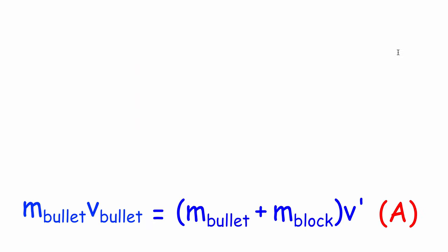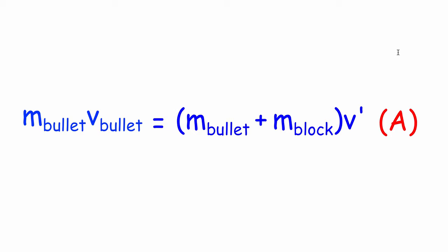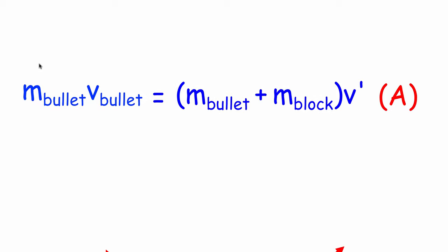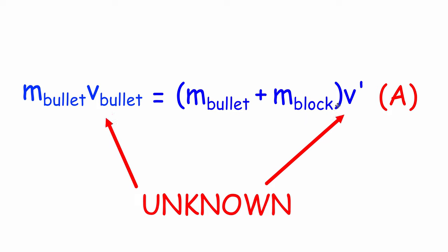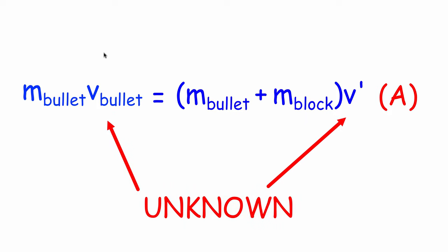Conservation of momentum says the momentum you start with is the momentum you end with, which means p_total equals p'_total. So here we have the total momentum before the bullet goes into the block of wood, and here is the momentum after the bullet's gone in. We have two unknowns — we don't know the speed of the bullet and we don't know the combined speed of the block and bullet. Let's label this as Equation A, and now let's take a look at energies.